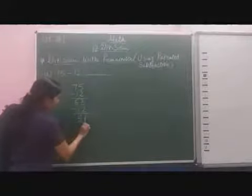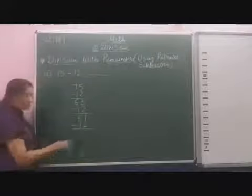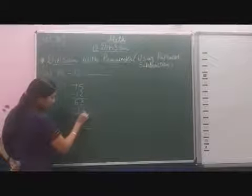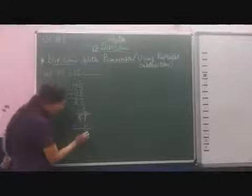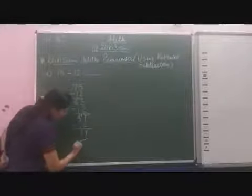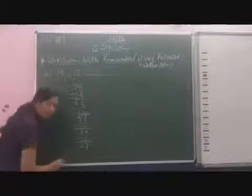51, again I will subtract 12. Here the 1 minus 2 not possible so we regroup in the tens place. So 11 minus 2, 9, 4 minus 1, 3. Again I will subtract 12. 9 minus 2, 7, 3 minus 1, 2, 27.